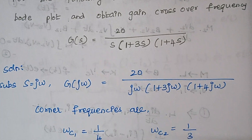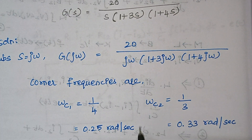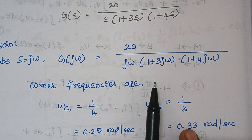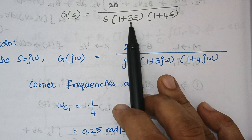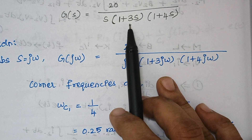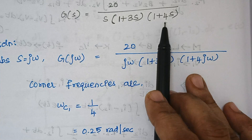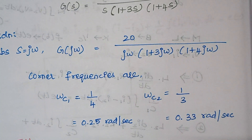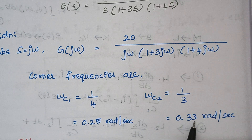After this we need to find corner frequencies. To find the corner frequency, we have to take the reciprocal of the coefficient of s. So here 1/3 is one corner frequency and 1/4 is the other. Calculating the values, we get 0.25 and 0.33.